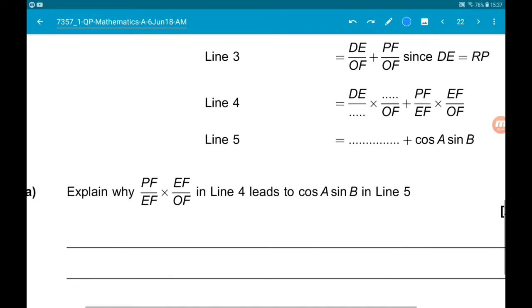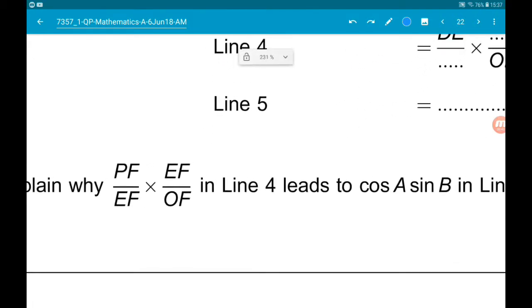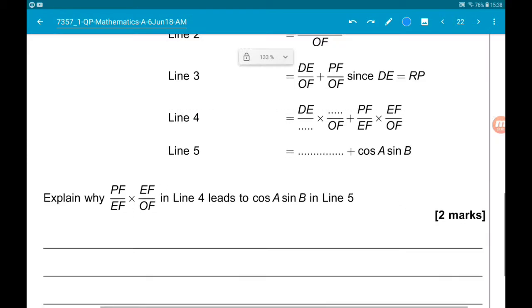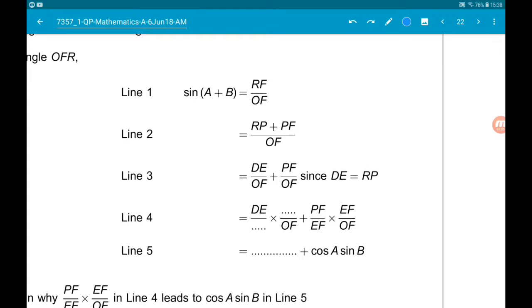Now we're asked to explain why PF over EF times EF over OF in line 4 leads to cos A sin B in line 5. So let's go through their proof line by line.